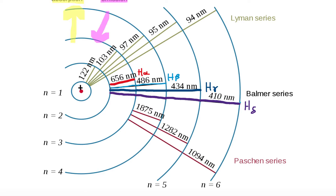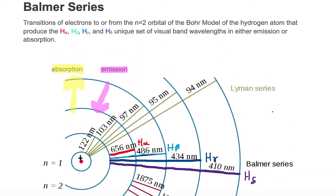The electron would need to absorb or emit this exact wavelength to either emit or absorb that wavelength color. It must be exactly 656 nanometers, 486 nanometers, 434 nanometers, or 410 nanometers. We call these transitions to and from the n equal to 2 state the Balmer series.